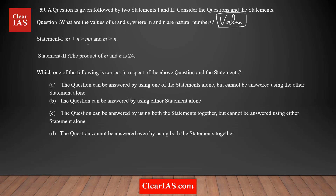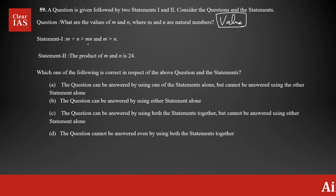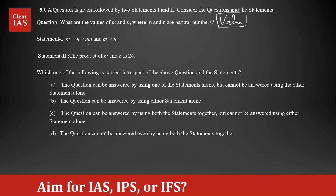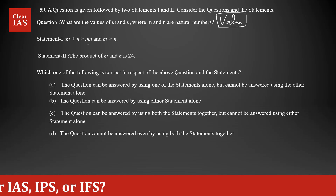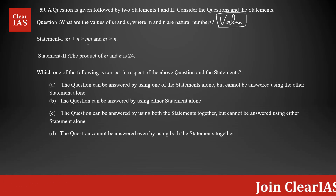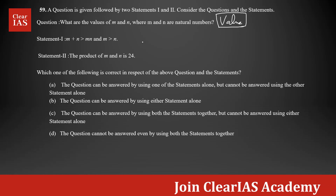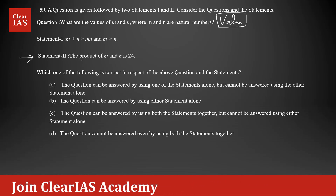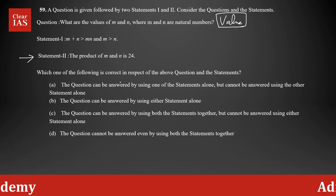There are two statements given. It is not a mandatory rule to always start with Statement 1 — you have complete freedom to decide which statement to start with. Whichever statement you're more comfortable with, start there. I'm going to start with Statement 2, which says the product of m and n is 24.